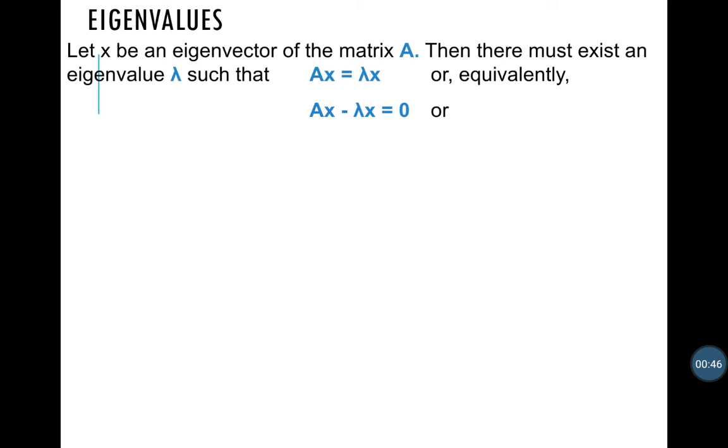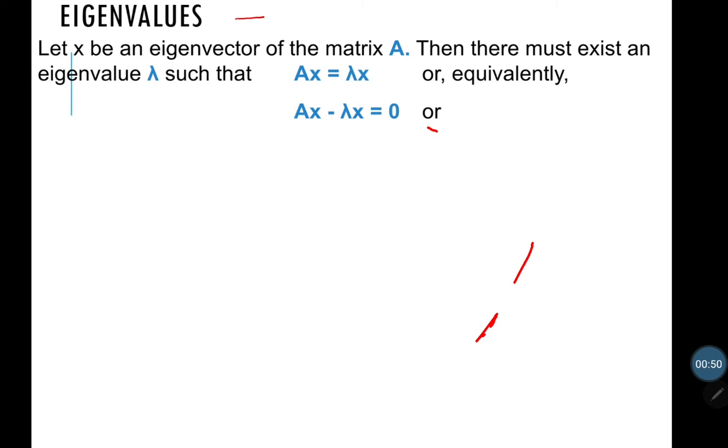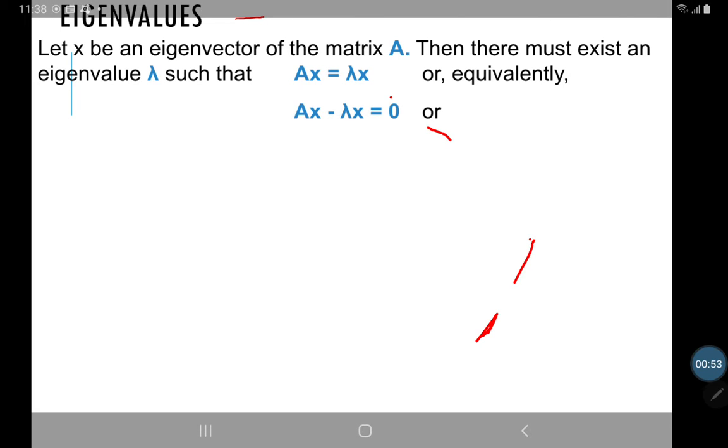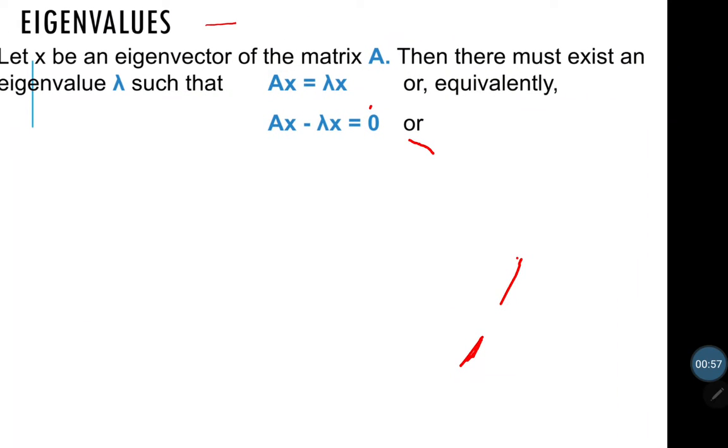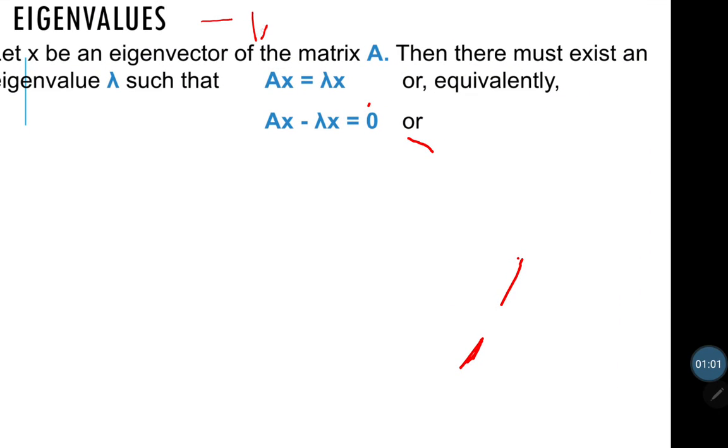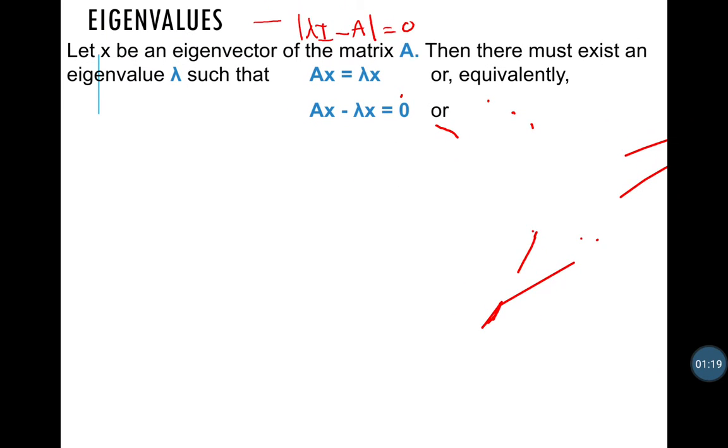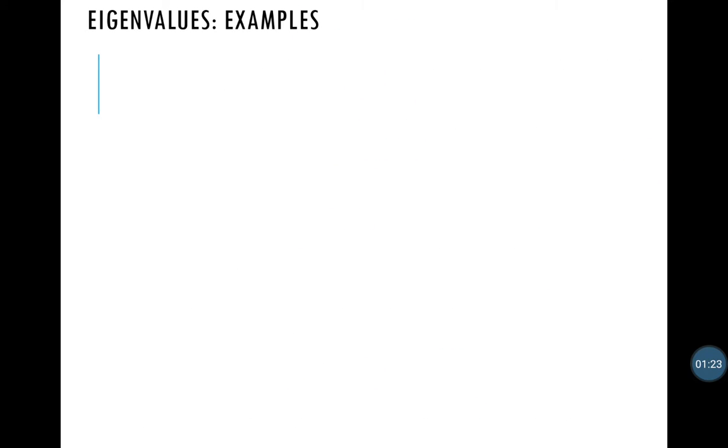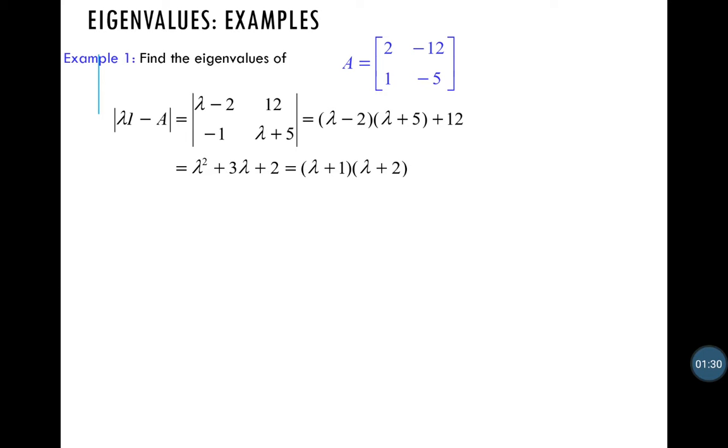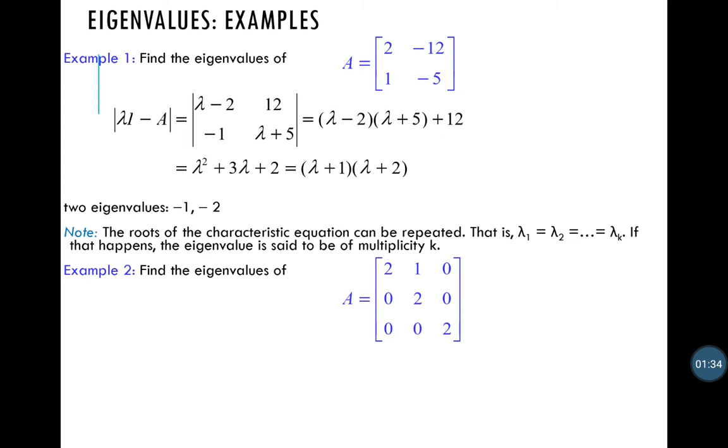So for eigenvalues you must remember the formula is like this. Lambda identity minus the matrix in question equal to zero. I know this doesn't make sense yet but I want you to try on this example by yourself at home and check whether you will get the same answer or not.